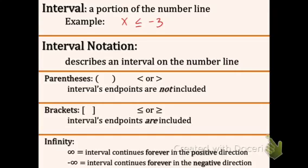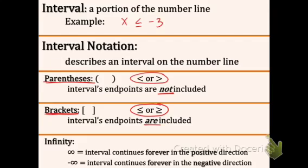Now we're going to learn how to use interval notation, which describes an interval on the number line. For interval notation, we use parentheses, brackets, and infinity. Parentheses mean the endpoints are NOT included — use them with strict inequalities (< or >). Brackets mean the endpoints ARE included — use them when the symbol has a line underneath (≤ or ≥). So: no line underneath → parentheses; line underneath → brackets.